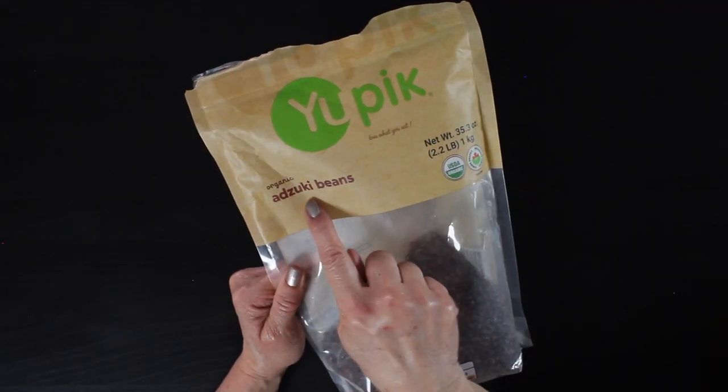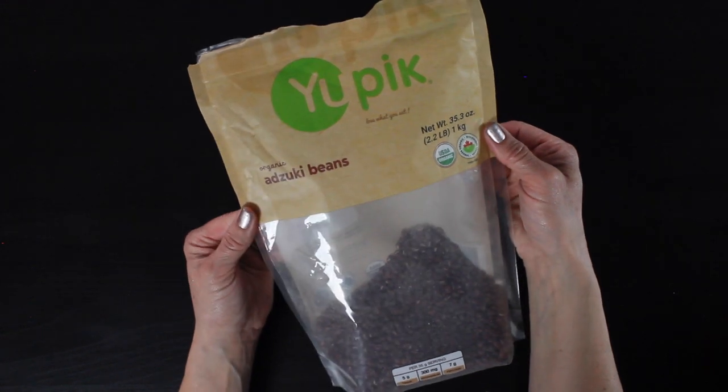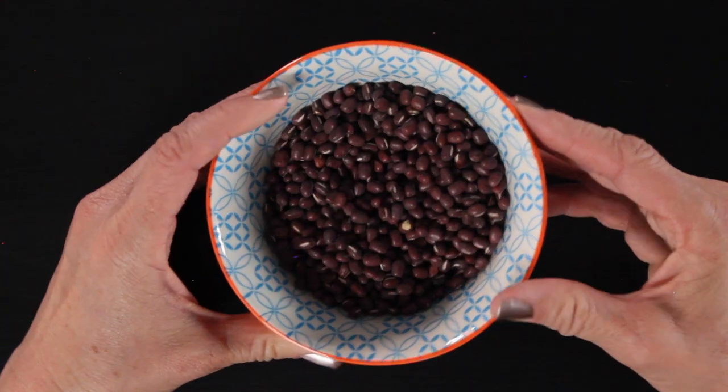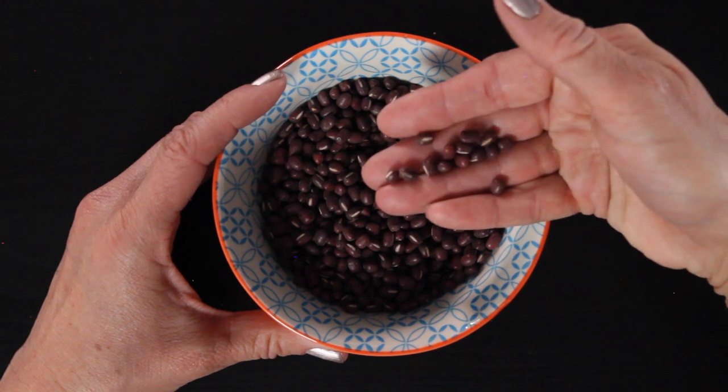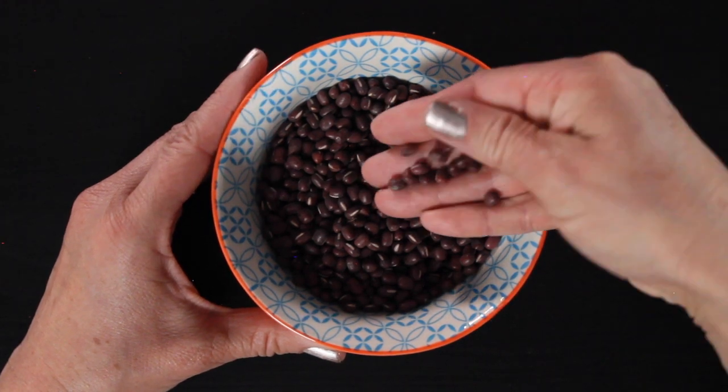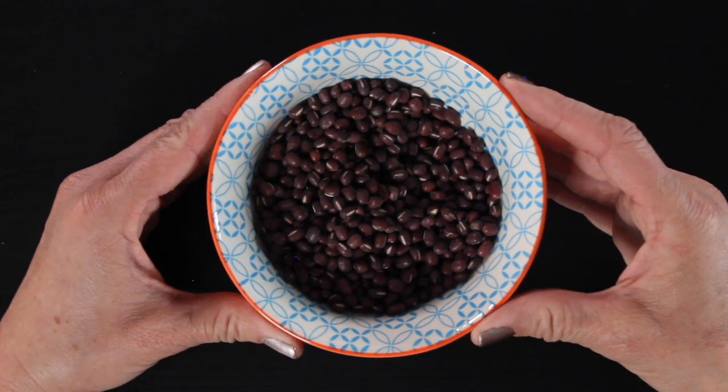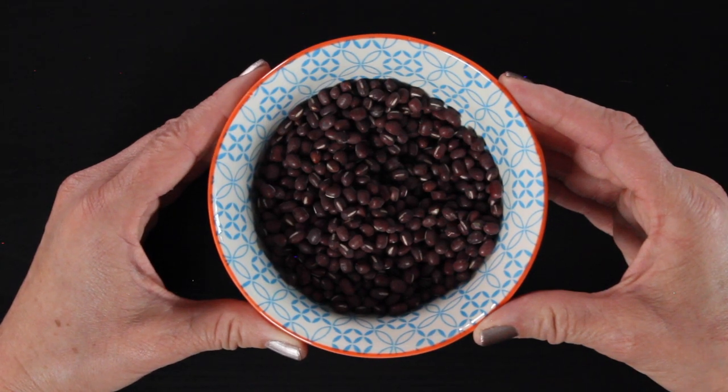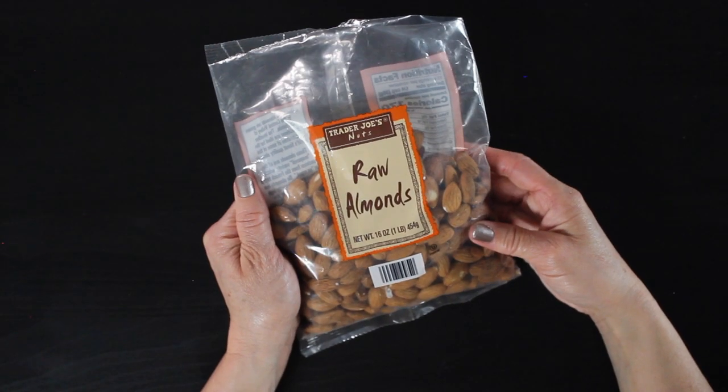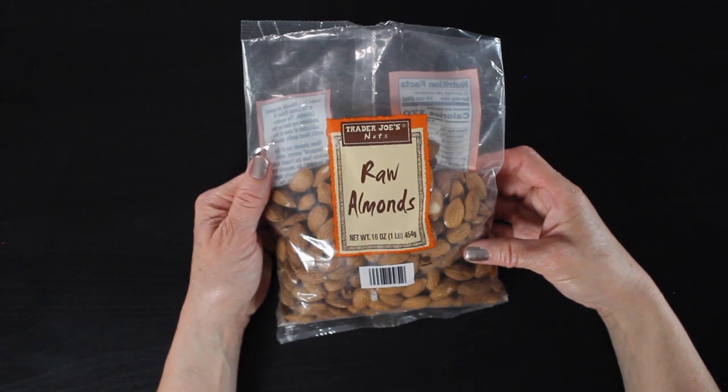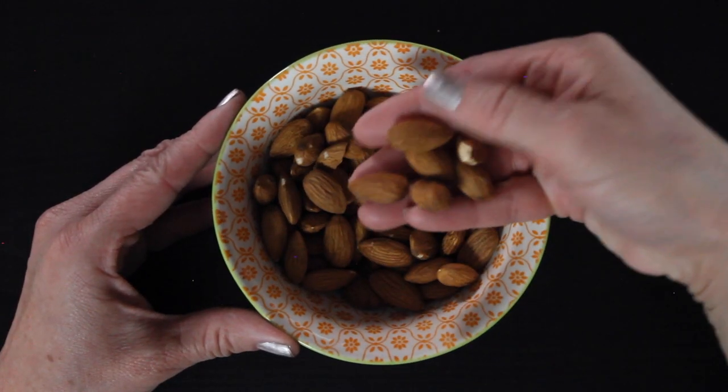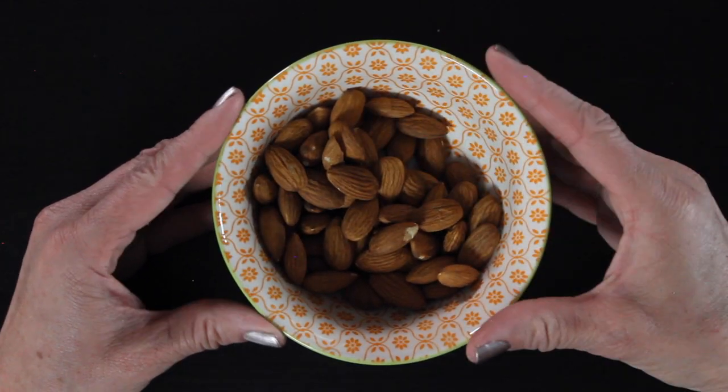For our exfoliants, the first one we'll be using is adzuki beans. They're also called azuki beans. These are red mung beans. I also found these on Amazon. My grocery store didn't have them. And what we'll be doing is grinding these up into a powder. It makes a lovely exfoliant. We'll also be using almonds. You want to make sure you get raw almonds that have the skins on them. You don't want blanched almonds.